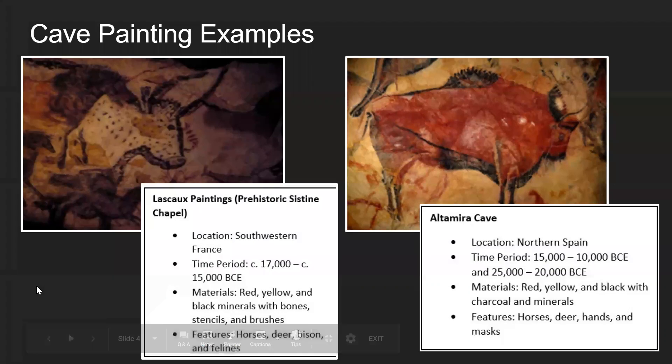Some cave painting examples: we have the Lascaux paintings, also known as the Prehistoric Sistine Chapel. They're located in southwestern France and are at least 17,000 to 15,000 BCE. The materials they used were red, yellow, and black minerals. They had different tools — hollow bones to blow pigment and paint through in front of a hand to make a silhouette or scatter paint. They made their own stencils with rocks and other materials. They had brushes usually from animal hair, their own hair, and sticks — rubbing the ends until soft to use as a brush.